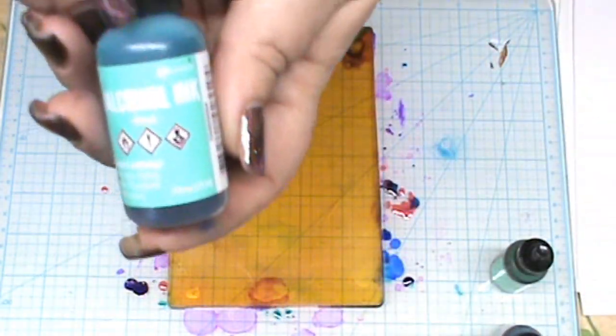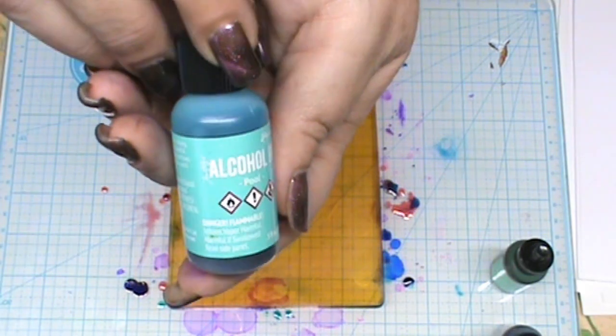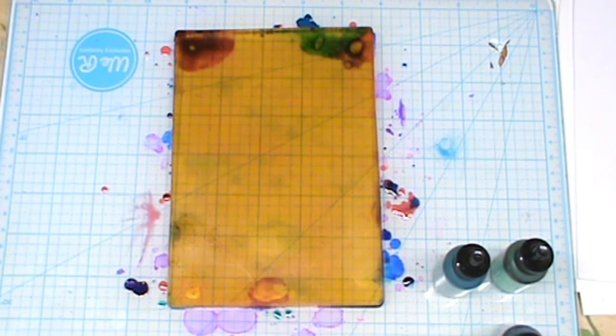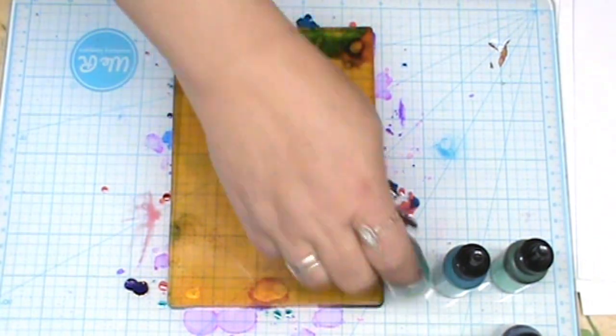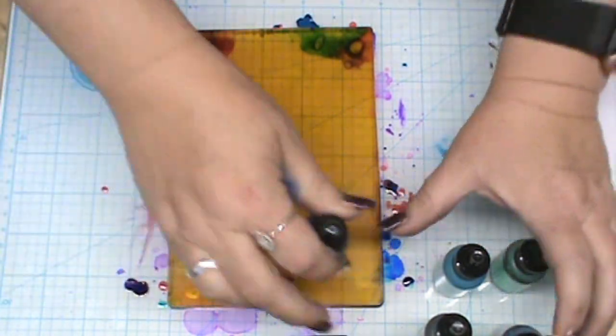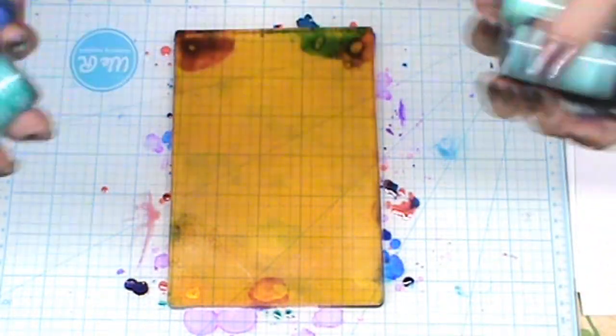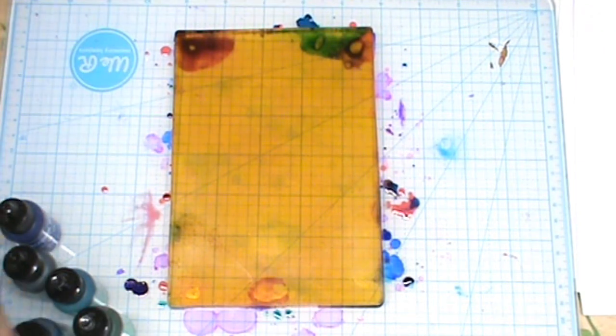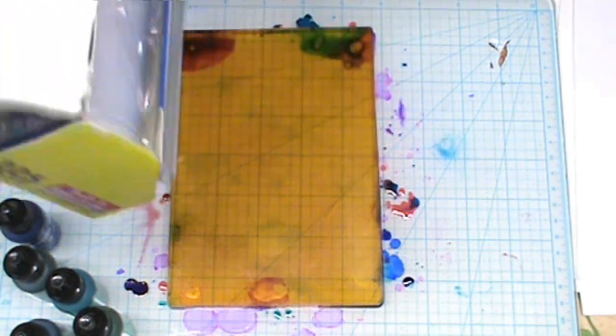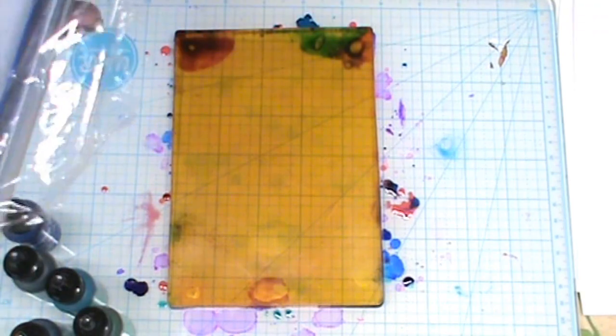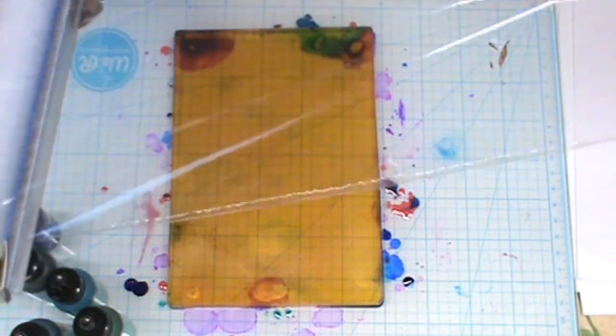Now here I'm going to use my main brand alcohol inks. I've got a few colors here to choose from. I believe I'm doing all blues on this one. I like to shake them up to make sure that they're good mixed up. So here we go, getting started. I get me a piece of plastic wrap here again.